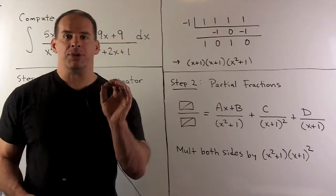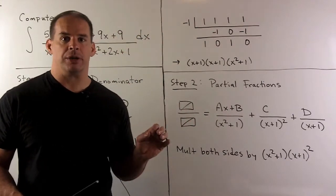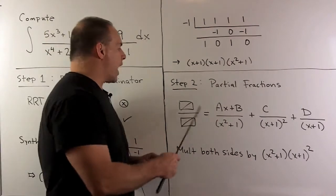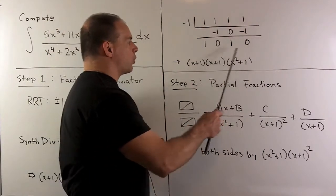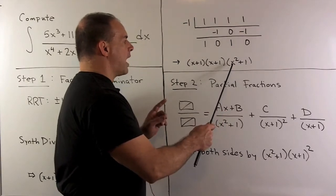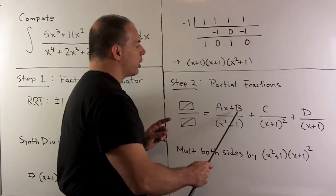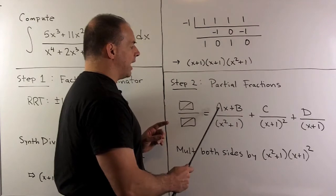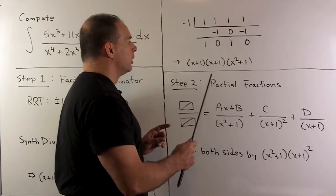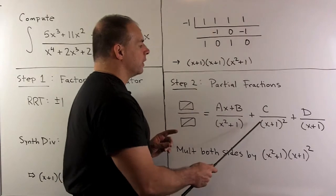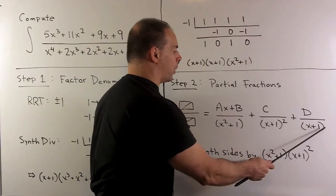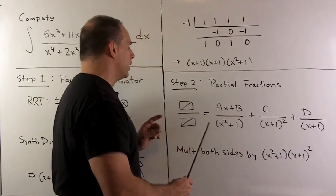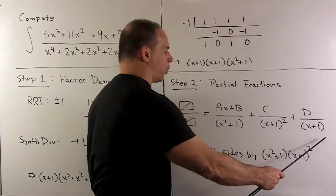Now, step 2, we set up our partial fraction expansion. Our rational function is going to be equal to the term that goes with x squared plus 1. We're going to have numerator of 1 degree less, so I have an ax plus b. For x plus 1 squared, we're going to need two terms, one for x plus 1 squared and one for x plus 1. This is the partial fraction expansion that we work with.